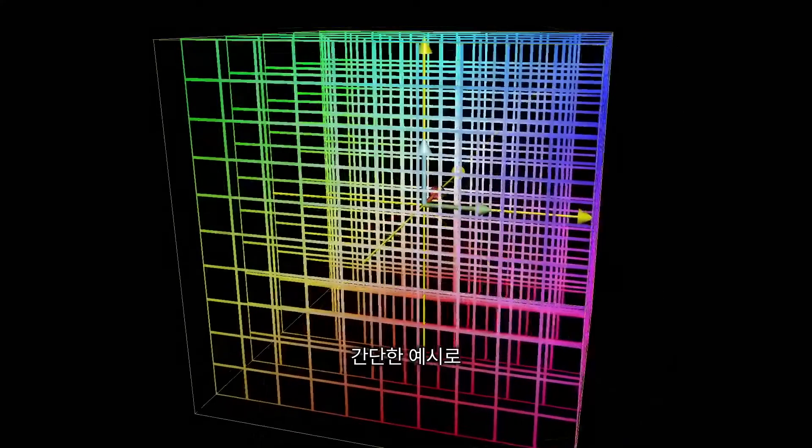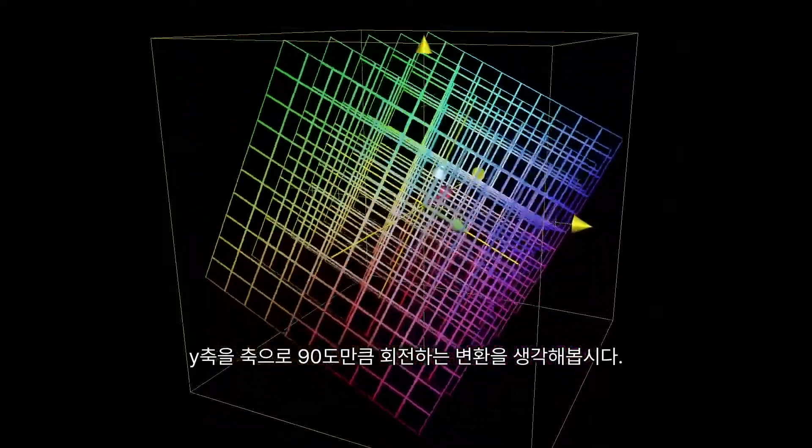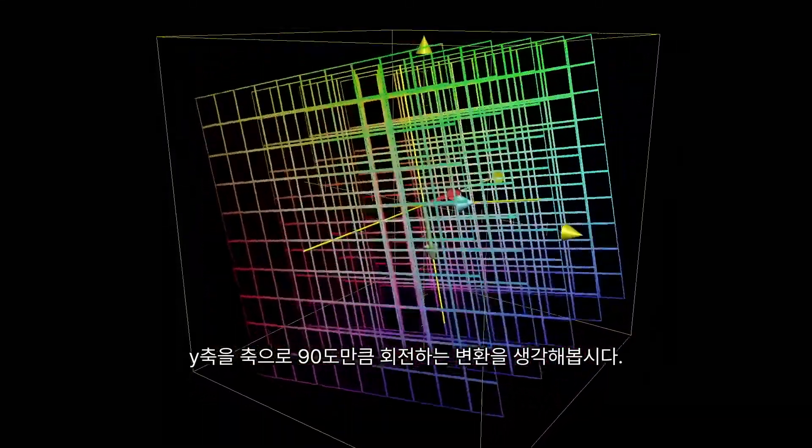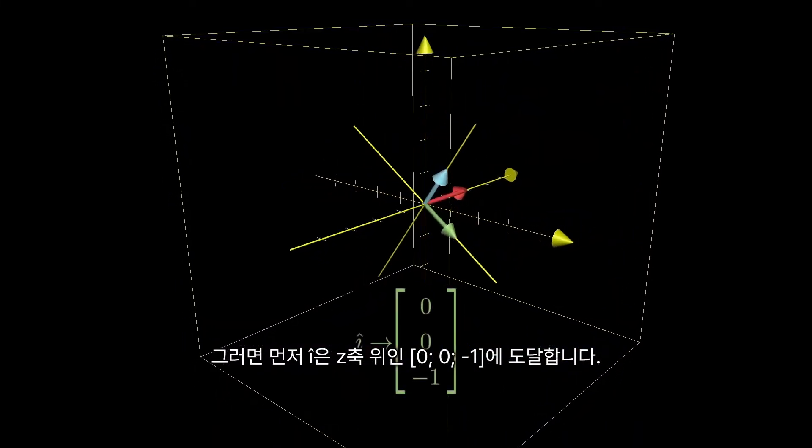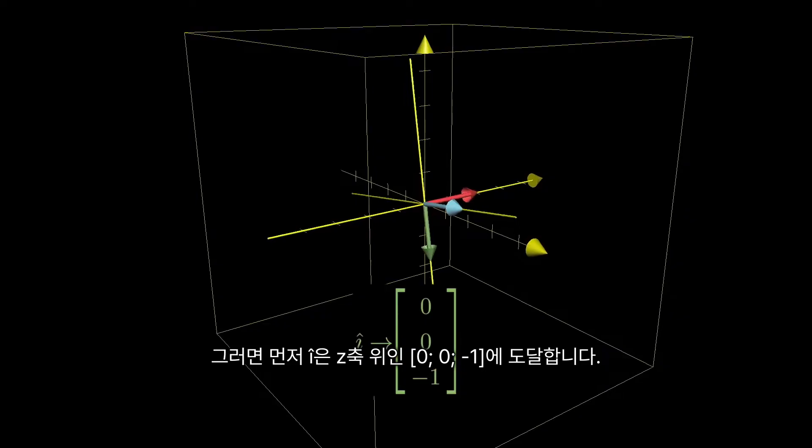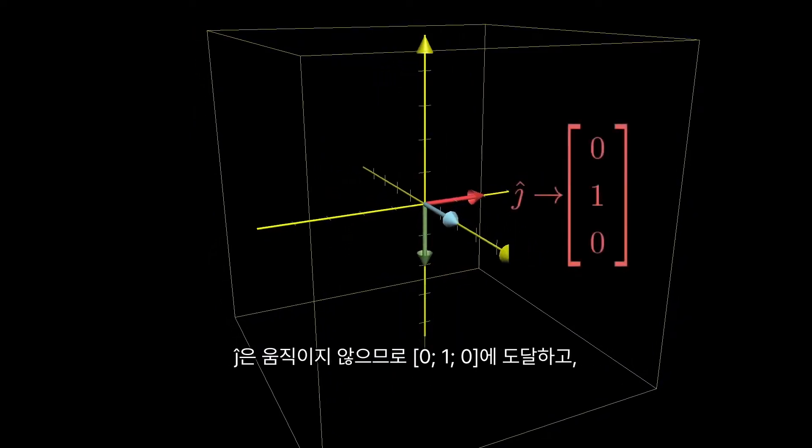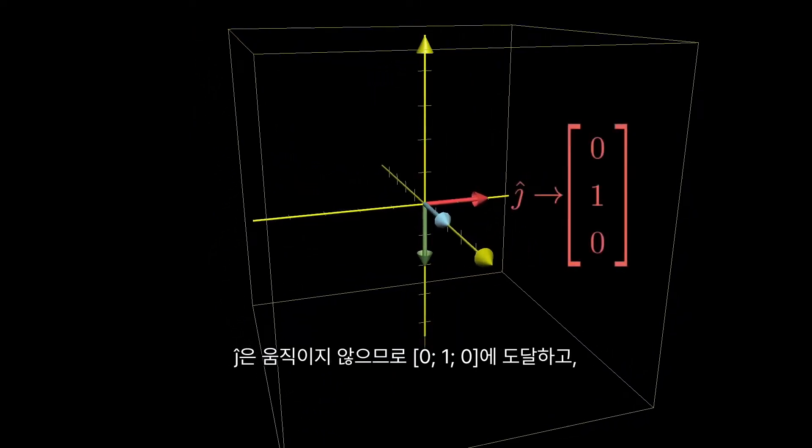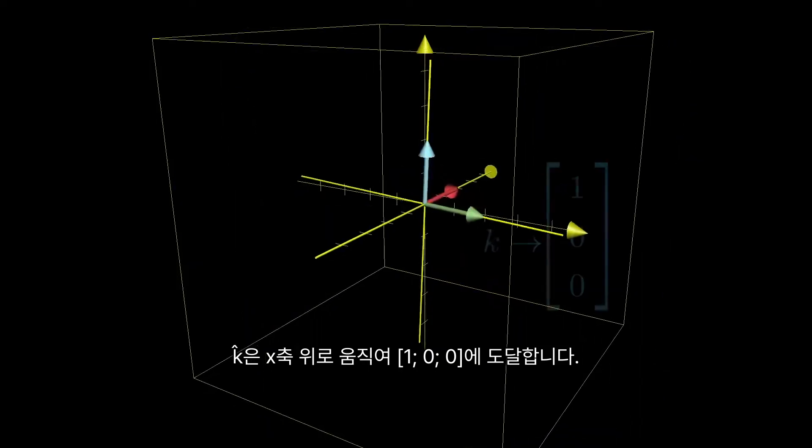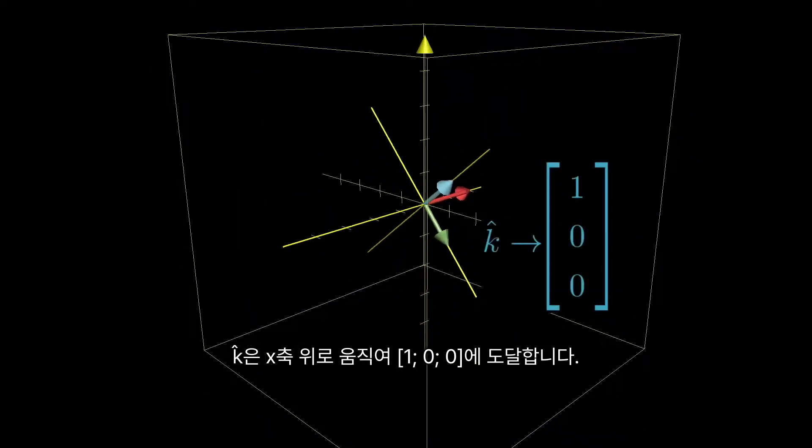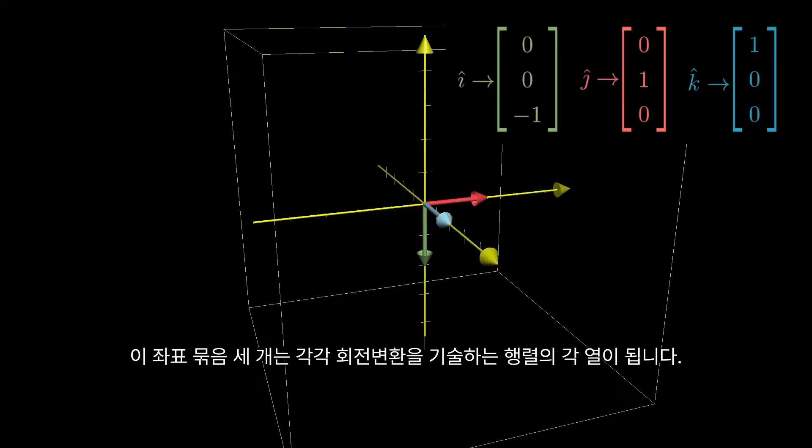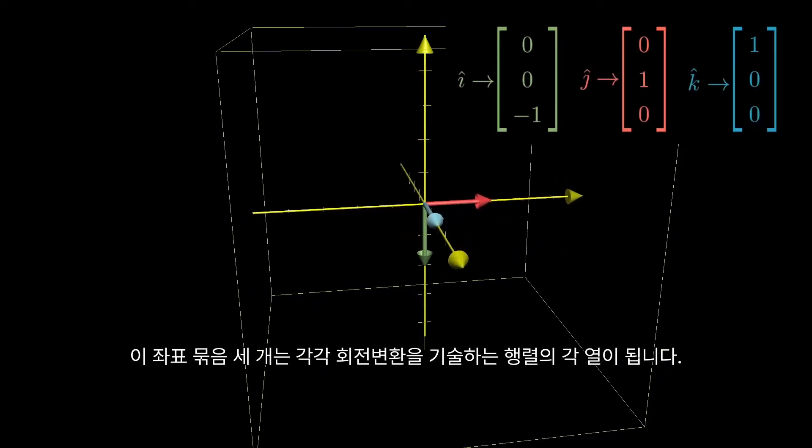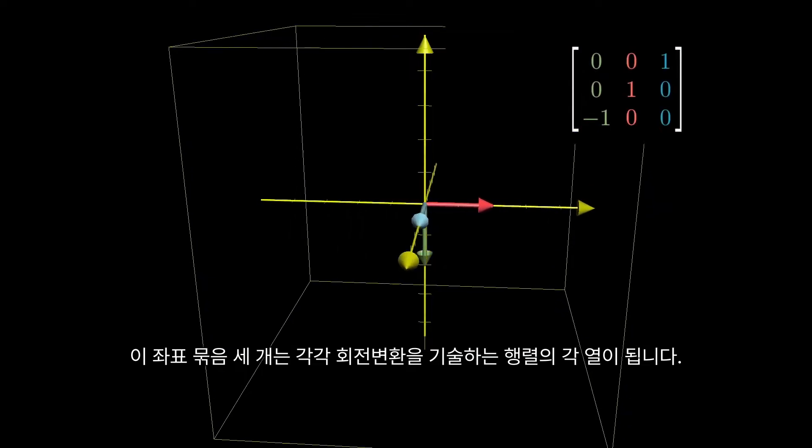As a simple example, consider the transformation that rotates space 90 degrees around the y-axis. So that would mean that it takes i-hat to the coordinates on the z-axis. It doesn't move j-hat, so it stays at the coordinates, and then k-hat moves over to the x-axis. Those three sets of coordinates become the columns of a matrix that describes that rotation transformation.